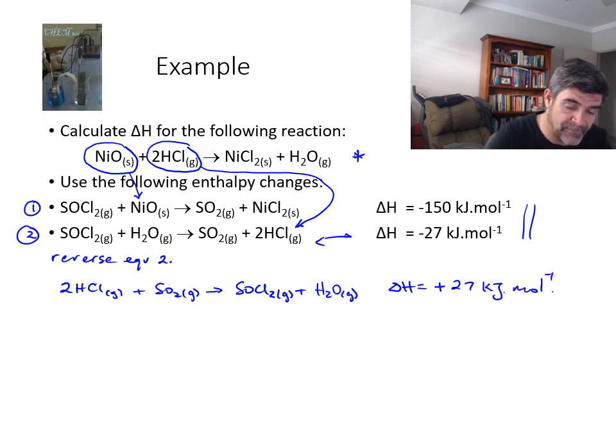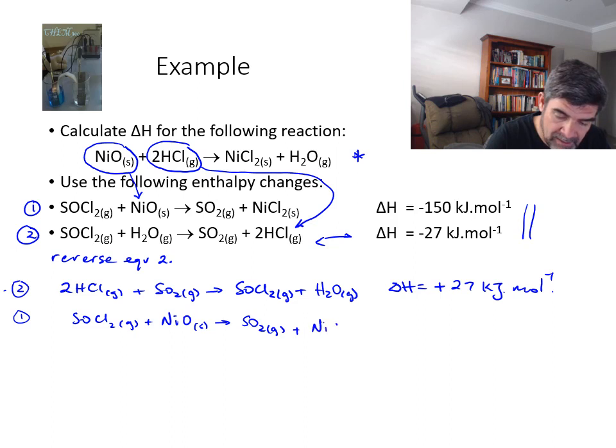Now I'm going to write equation 1. So this was 2 reversed, so minus 2 if you like, and then 1 is as it's written: SOCl2 gas plus NiO solid to SO2 gas plus NiCl2 solid. Now the important thing of course to remember is that, first of all, I'll bring the delta H value down as well, which is minus 150 kilojoules per mole.